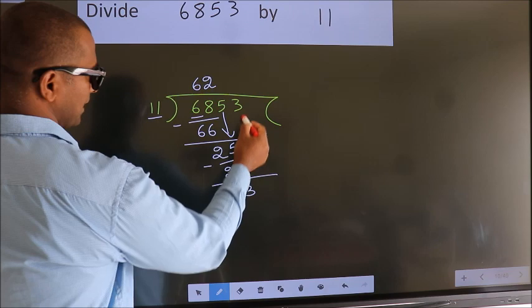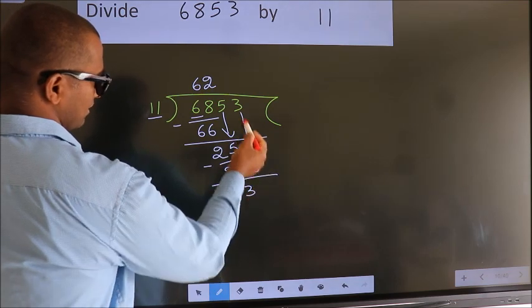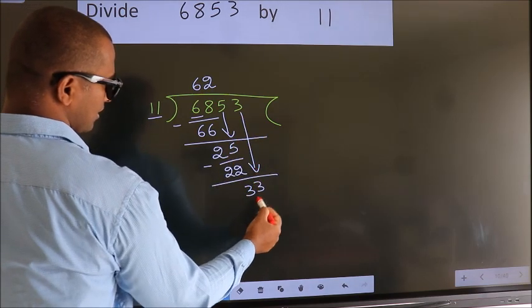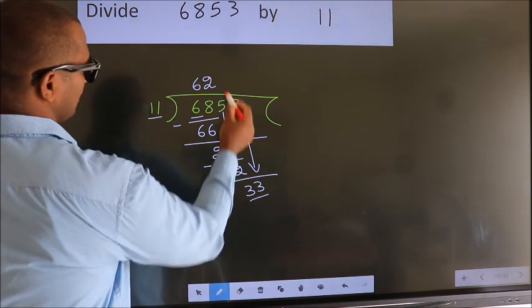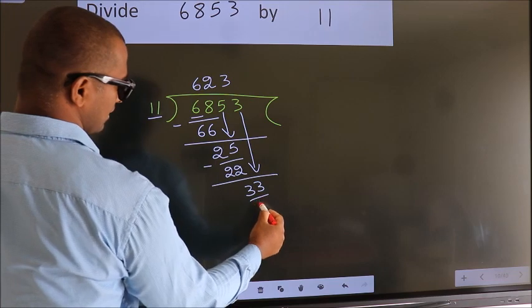After this, bring down the beside number. So 3 down, giving us 33. When do we get 33? In the 11 table, 11×3 equals 33.